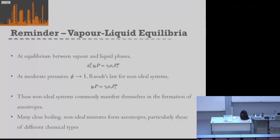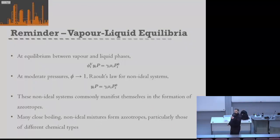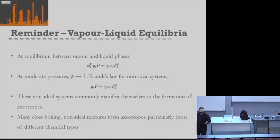What that means is not only do we have these non-ideal systems, but these non-ideal systems can commonly manifest azeotropes. We tend to get azeotropes when we have fairly close-boiling systems of very non-ideal mixtures of different chemical types. The classic example we've been discussing several times is water and ethanol — when we put them together, we get an azeotrope in our vapour-liquid equilibrium.